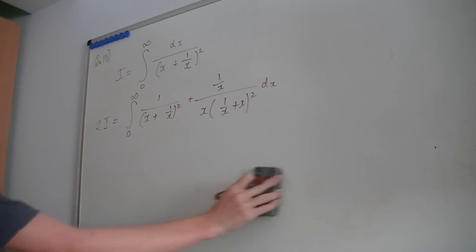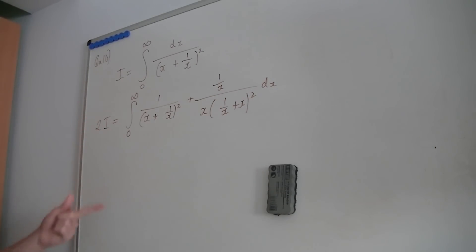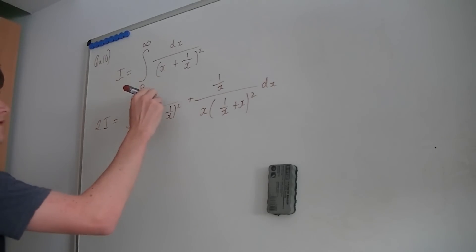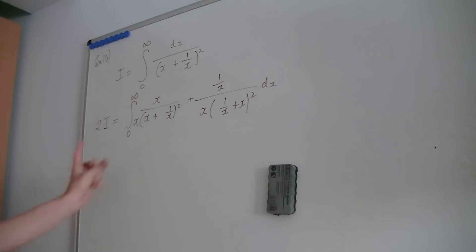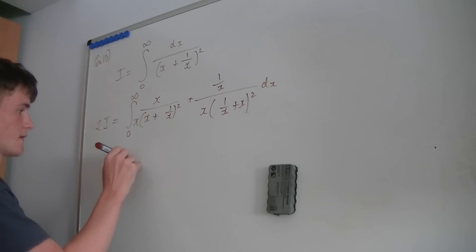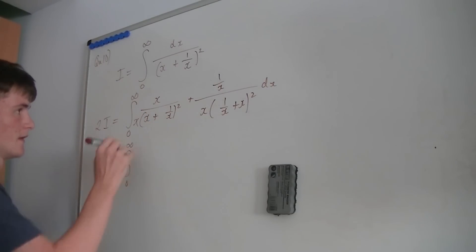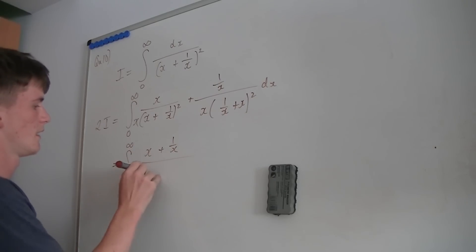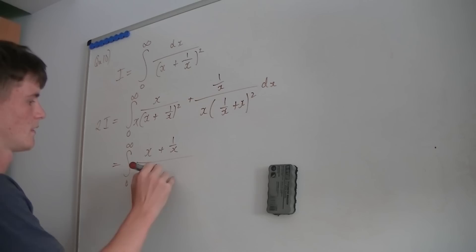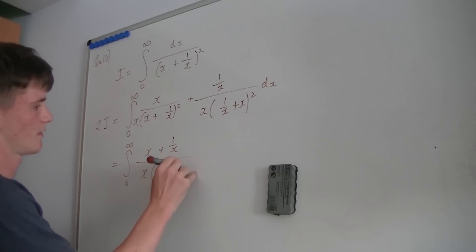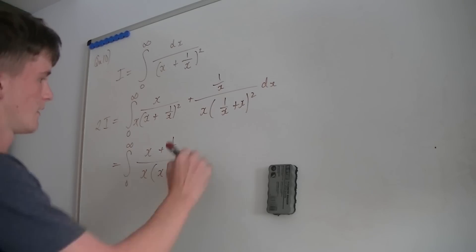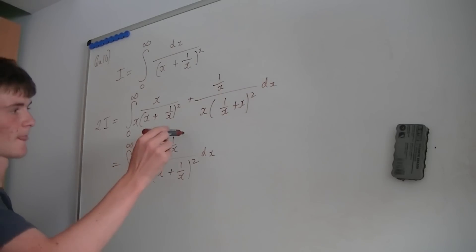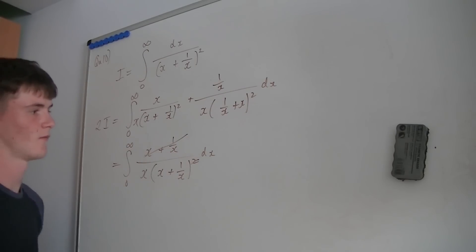Now I'm going to create a common denominator by multiplying by x in both the numerator and denominator, then bring the two fractions together to get the integral from 0 to infinity of (x + 1/x) over x(x + 1/x) squared dx. Notice that one of those factors cancels.